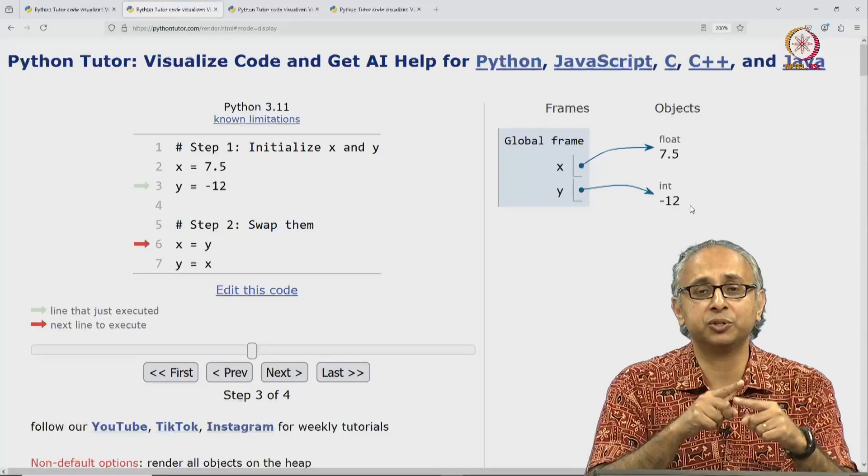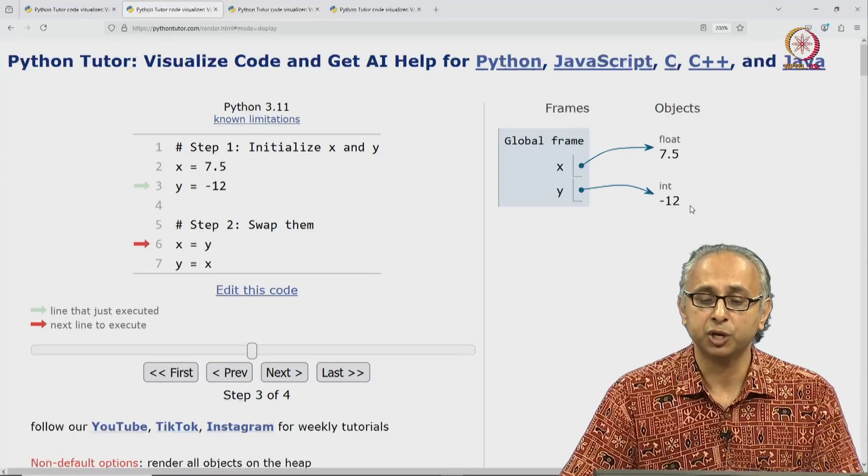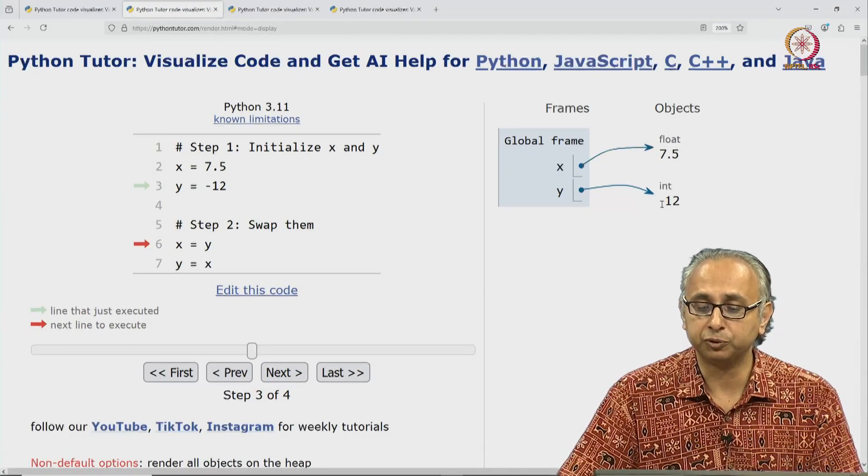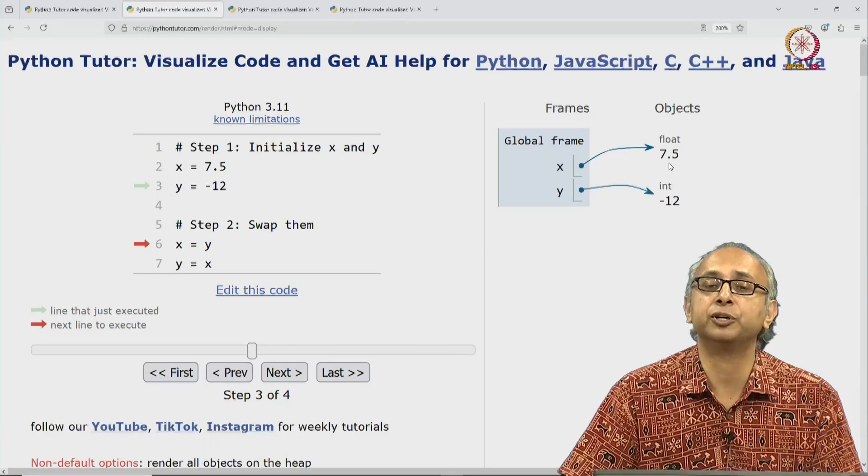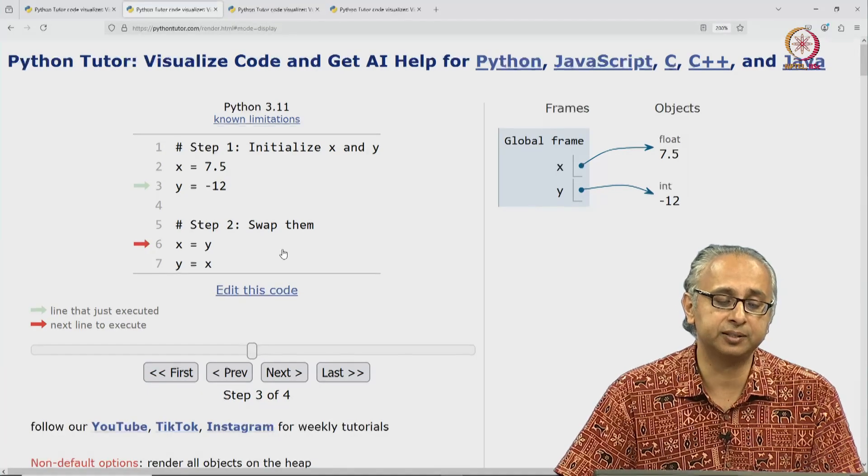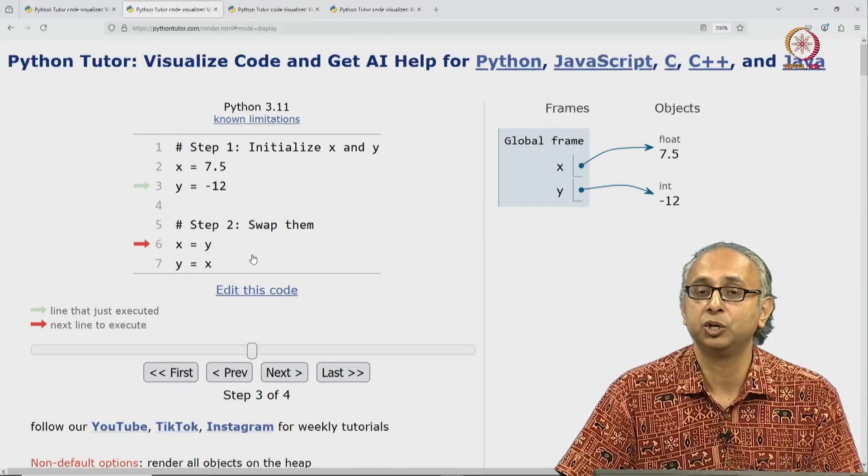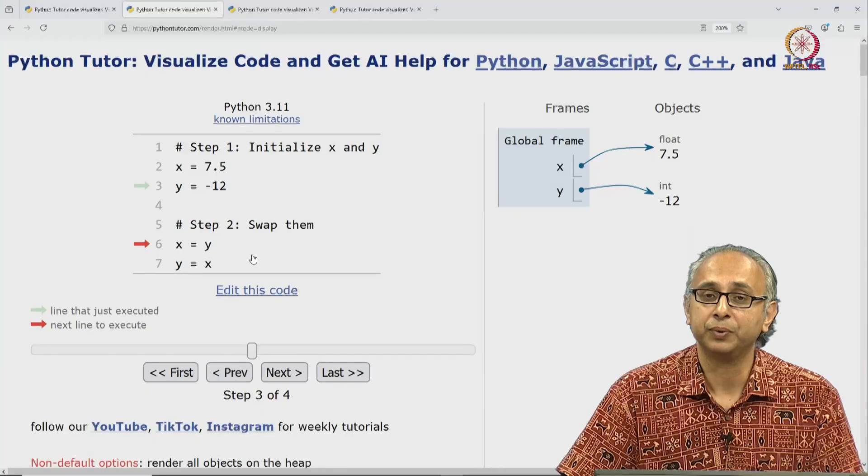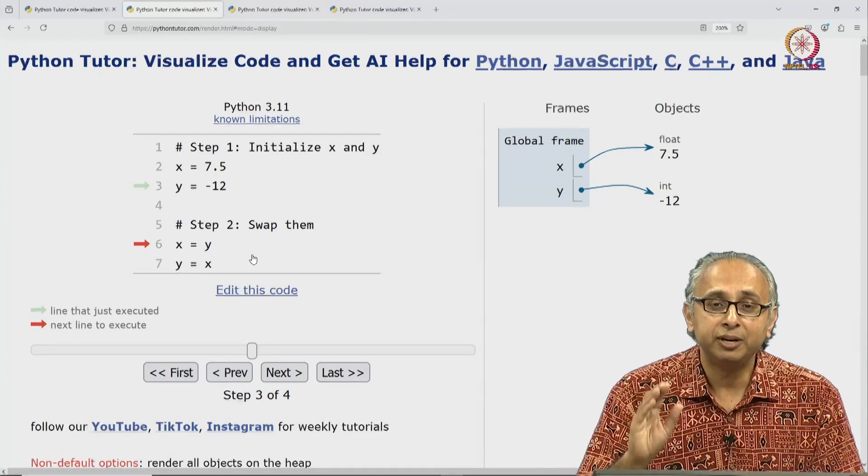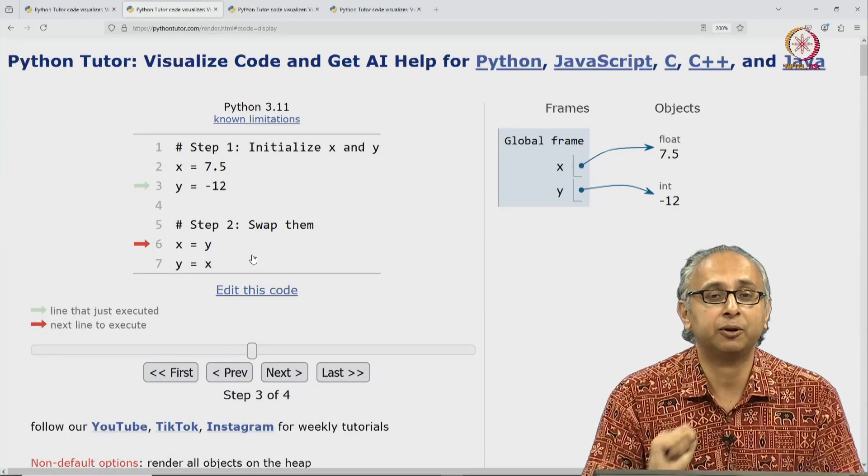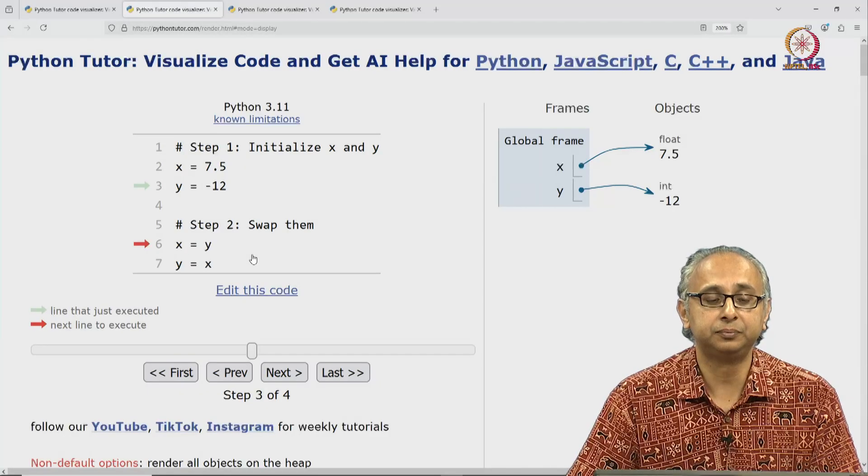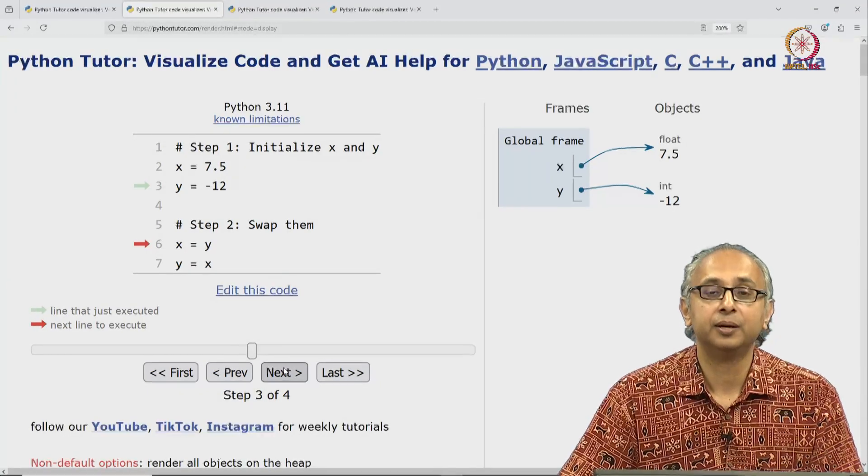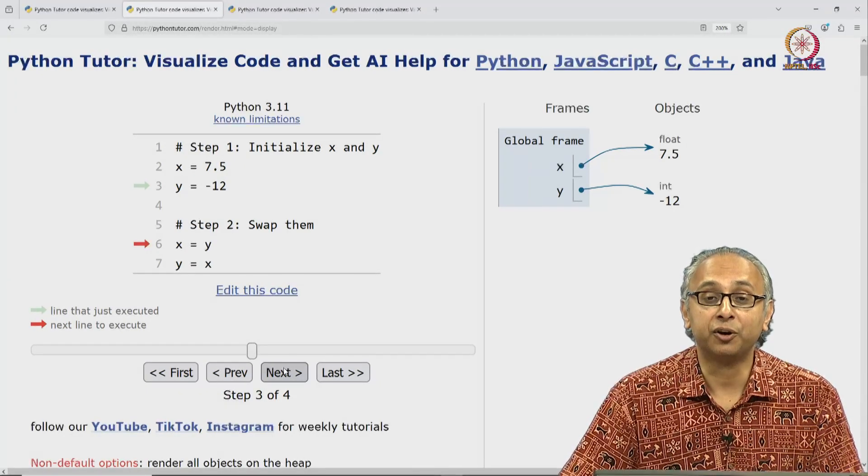And now we just want to cross these over. We want to swap these values. We want X to refer to the int and we want Y to refer to the float and our friend thinks that these two assignment statements should do the job. Think about very carefully what is going to happen when we click on next. So let's click on next.